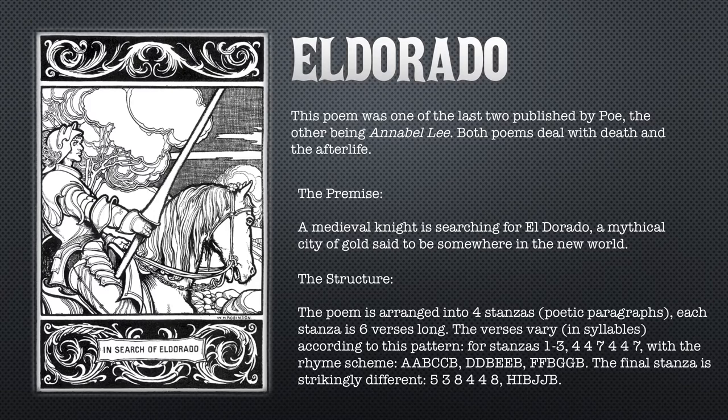The second stanza follows the rhyme scheme d, d, b, e, e, b. The fourth stanza follows f, f, b, g, g, b. The final stanza is strikingly different from the first three — the verse length changes to five, three, eight, four, four, eight — and the rhyme scheme is h, i, b, j, j, b. This creates a remarkable effect.